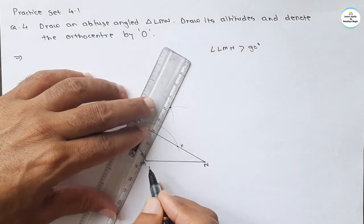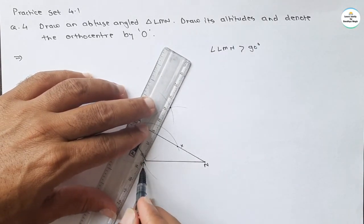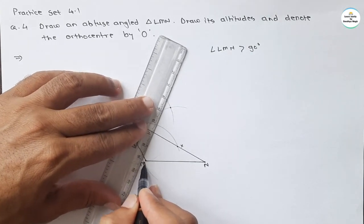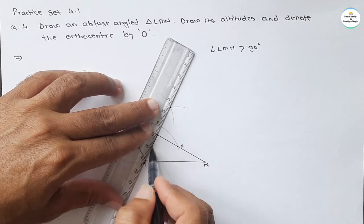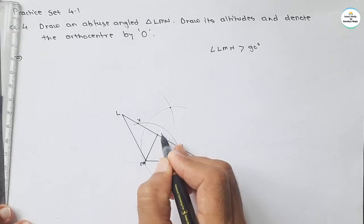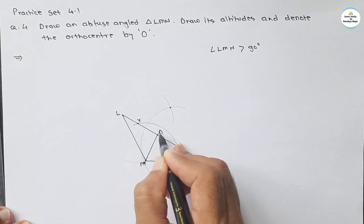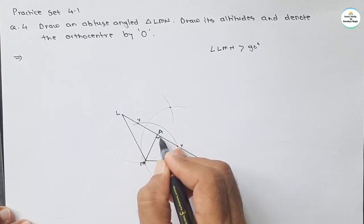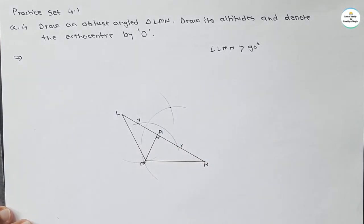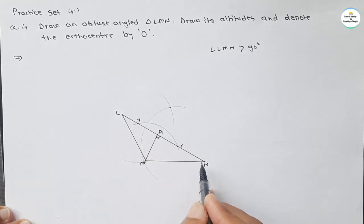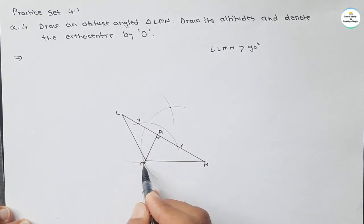If we join these two intersecting points, you will get an altitude. Let it be named A, so MA is an altitude. You will get a 90-degree angle here. This is the first altitude. Now we will draw another altitude from L to line MN.